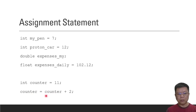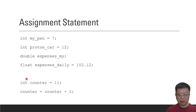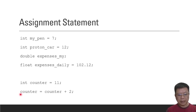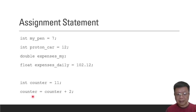Another case: counter + 2 = counter. What does this mean? Counter is initially 11, declared as integer. When we call the expression counter = counter + 2, the current counter value is 11, so 11 plus 2 means the new counter variable now has a value of 13.